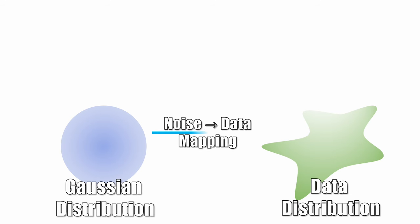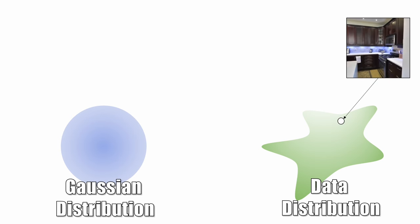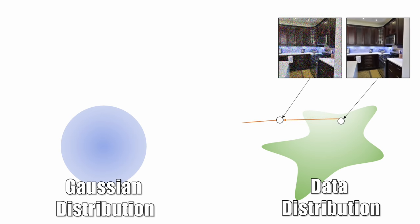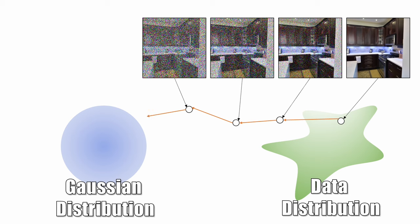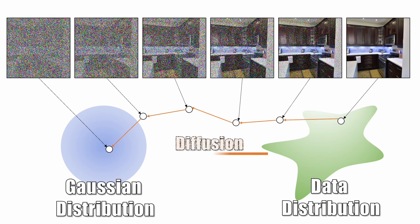How do diffusion models work? The core idea is to learn a noise to data mapping. This direction is hard. The other direction is much simpler. By progressively adding noise, we create a path from a data sample to a noise sample. This is known as diffusion.